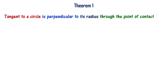Tangent to a circle is perpendicular to its radius through the point of contact. This is Theorem 9.1.